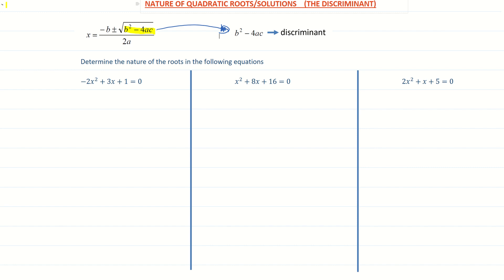Looking at three examples, the first one asks us to determine the nature of the roots in the following equation: minus 2x squared plus 3x plus 1. The value of a in this quadratic equation is minus 2, the value of b is positive 3, and the value of c is positive 1. Subbing them into b squared minus 4ac, we get 3 squared minus 4 times minus 2 times positive 1, which gives us 17.